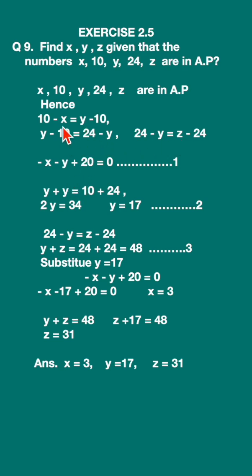First equation: you will get minus x minus y. Bring it on the left hand side plus 20 is equal to 0. From the second equation, if you simplify you will get 2y is equal to 34.